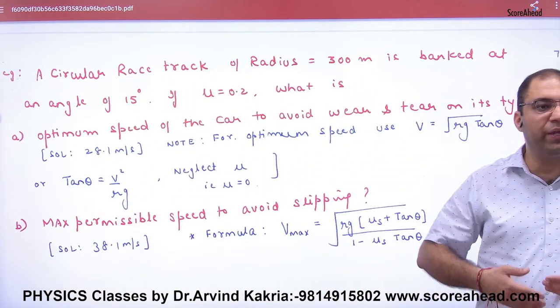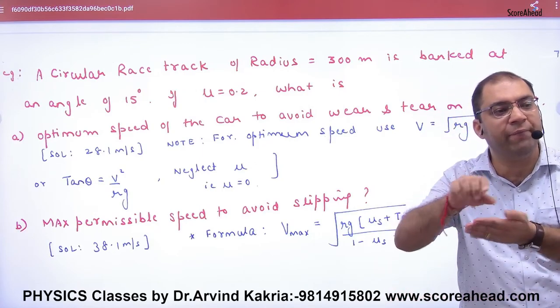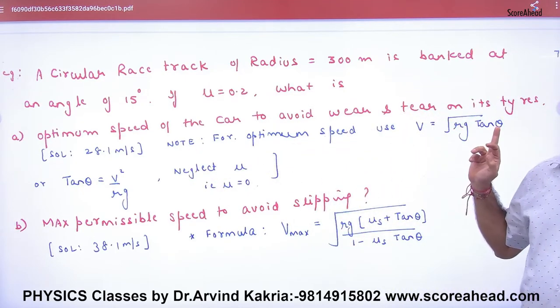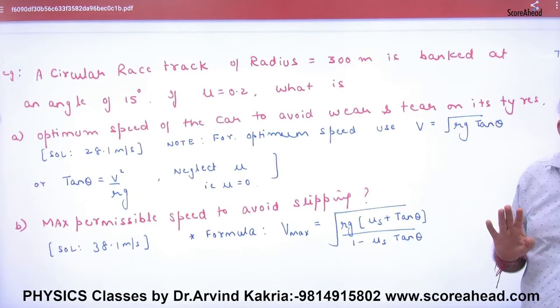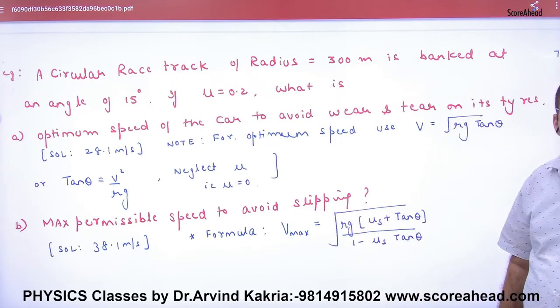In the first case, there is no wear. When the tire doesn't have tire, then what do we do with mu 0? If you put the mu 0, then the answer will go. From here, you will have the answer. The other part is that take the maximum speed so that it doesn't have slipping.